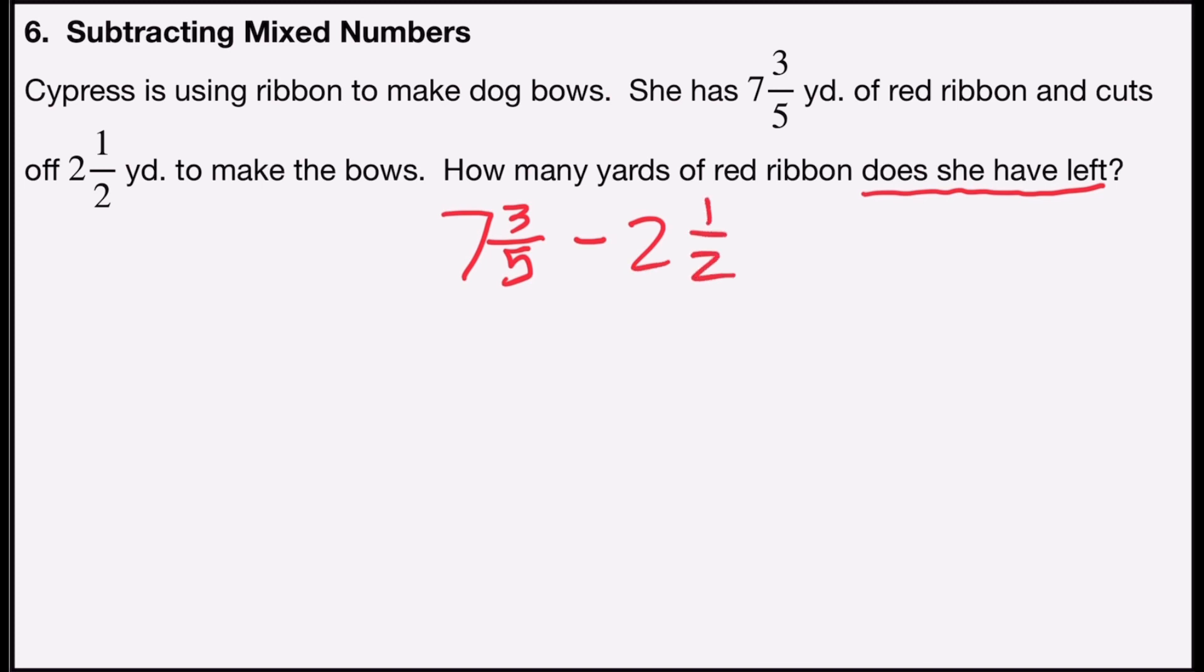And like we did before, we're going to rewrite these as fractions. Five times seven is thirty-five plus three is thirty-eight back over five, so thirty-eight fifths minus two times two is four plus one is five halves.